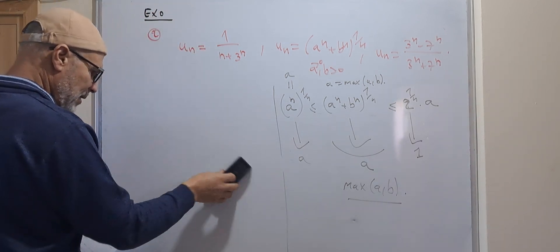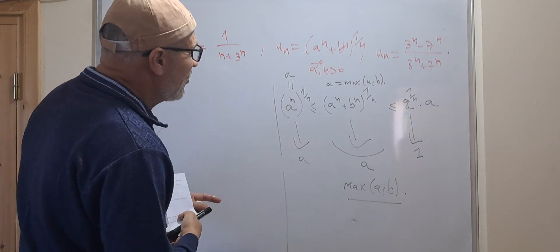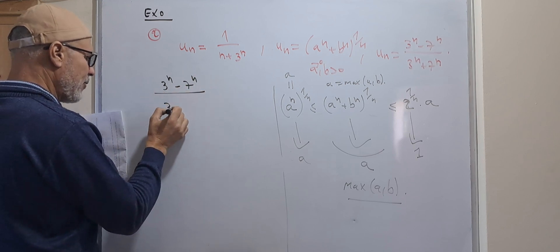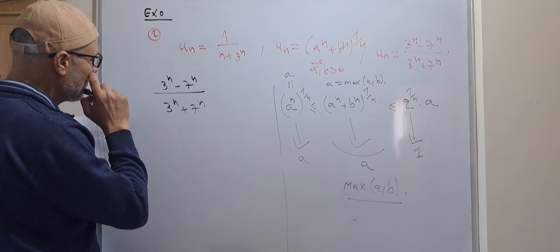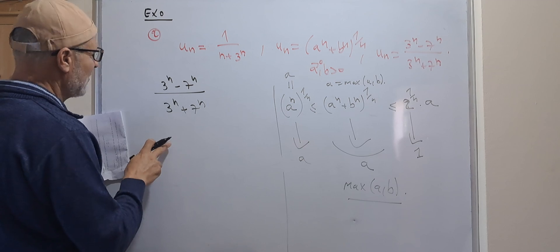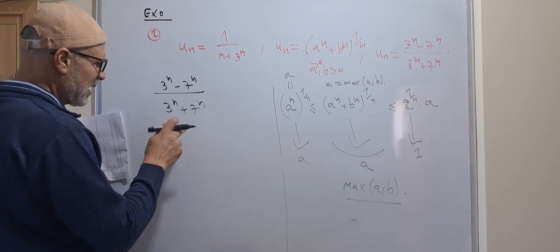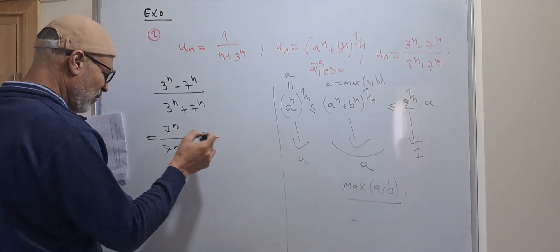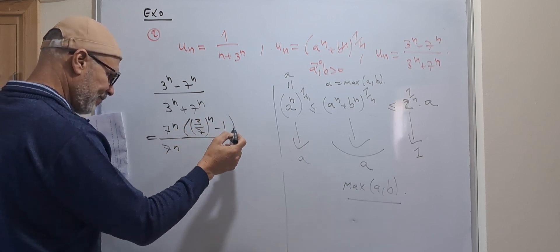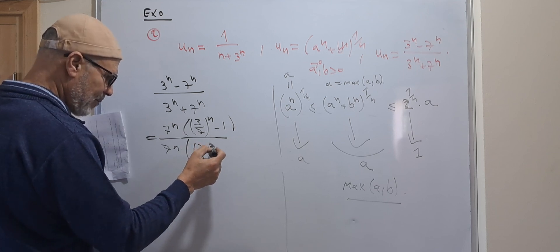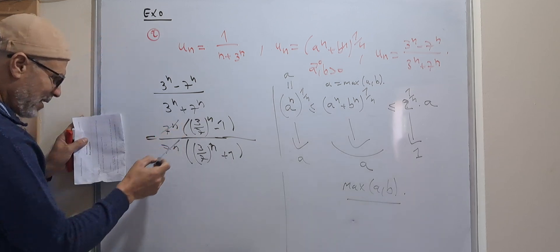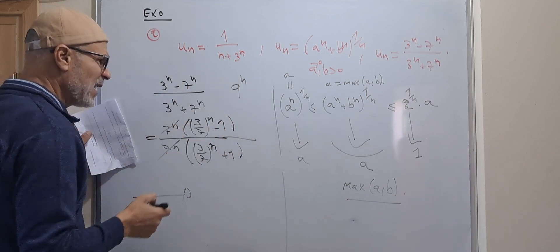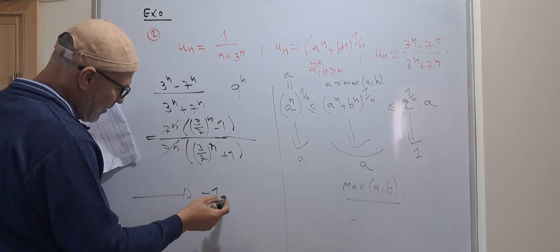For the last one, u_n = (3^n − 7^n) / (3^n + 7^n). Dividing numerator and denominator by 7^n, we get (3/7)^n minus 1 over (3/7)^n plus 1. Since (3/7)^n goes to 0 from the previous exercise, this simplifies to (0 − 1)/(0 + 1) = −1. The result is minus 1.